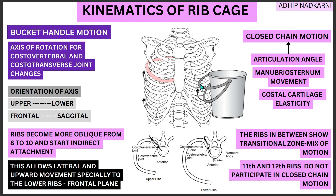Now that we have understood the bucket handle movement and why it is caused — because of the orientation of the axis, the ribs, and also the indirect attachment to the sternum — let us move slightly higher. What happens above the 8 to 10 level? The ribs in between show a transitional zone which shows a mix of motion. The other motion is the pump handle motion that we will be talking about in the next video. Simply put, the upper ribs move in a pump handle motion, the middle ribs show a mix of both movements, and the lower ribs show a pure bucket handle motion.